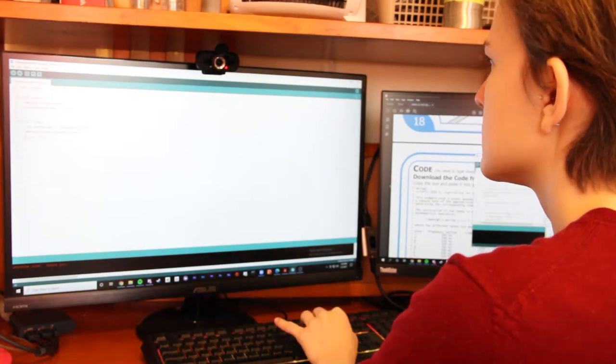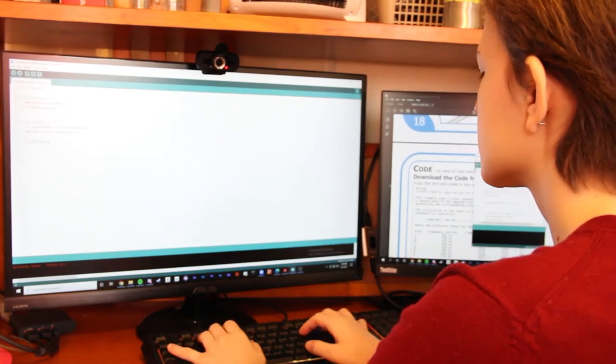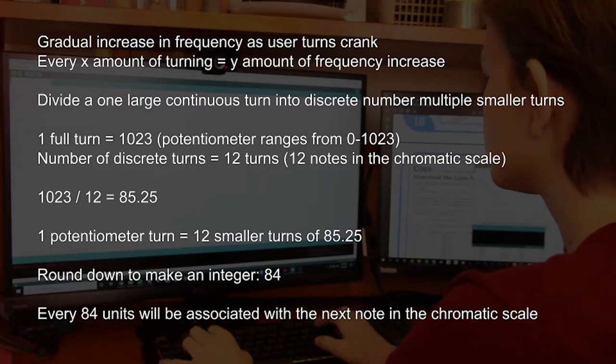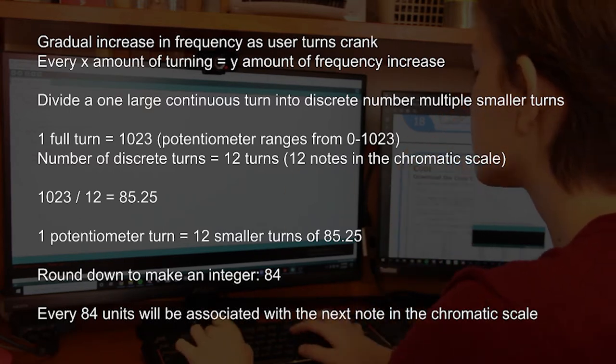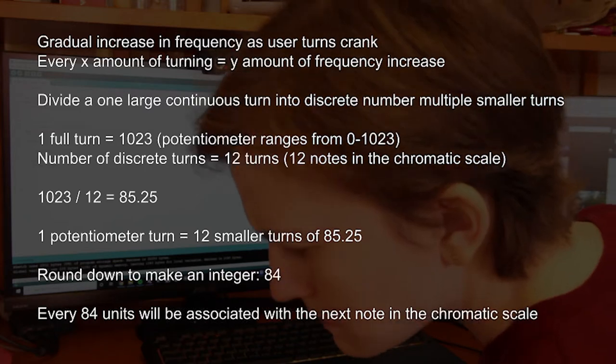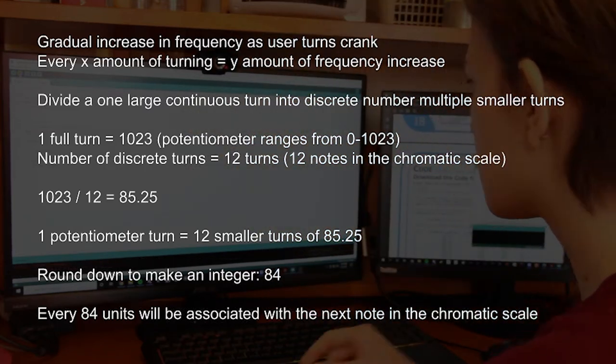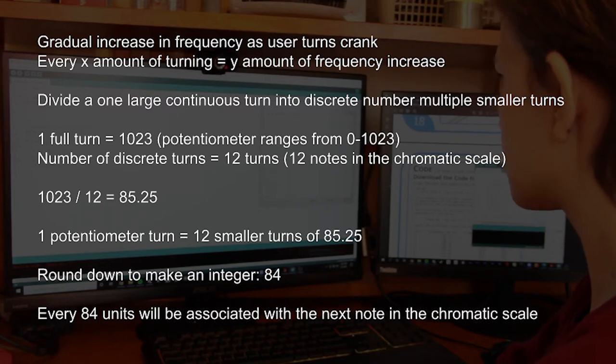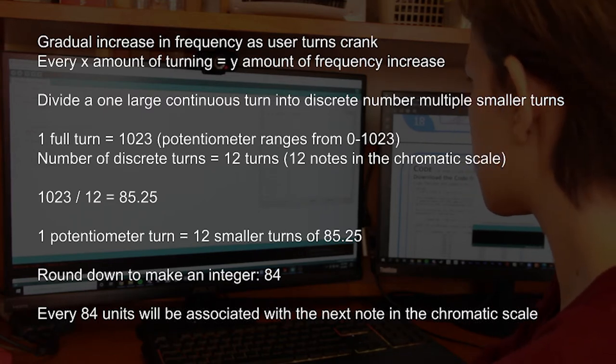I had to do a little bit of math here to figure this out. The question that I needed to ask here was how much turning of the potentiometer would allow a frequency change. For every x amount of turning of the potentiometer there should be a y amount of frequency increase, and I wanted this increase to be distributed linearly or the same amount of increase for each step.